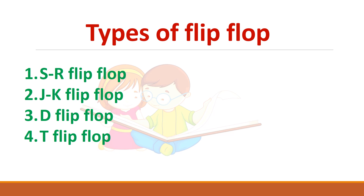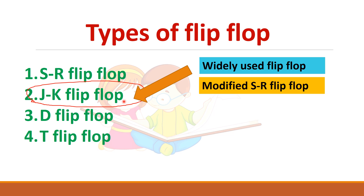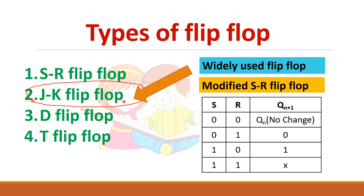We have already seen SR flip-flop in the previous video — you can refer to the link in the description. SR flip-flop is the basic flip-flop; JK flip-flop is a modified version of it, so go through SR flip-flop before this video. JK flip-flop is the widely used flip-flop. In SR flip-flop, S and R are the inputs with four combinations, and the 1,1 state is a forbidden state — you cannot make S equal to R equal to 1.